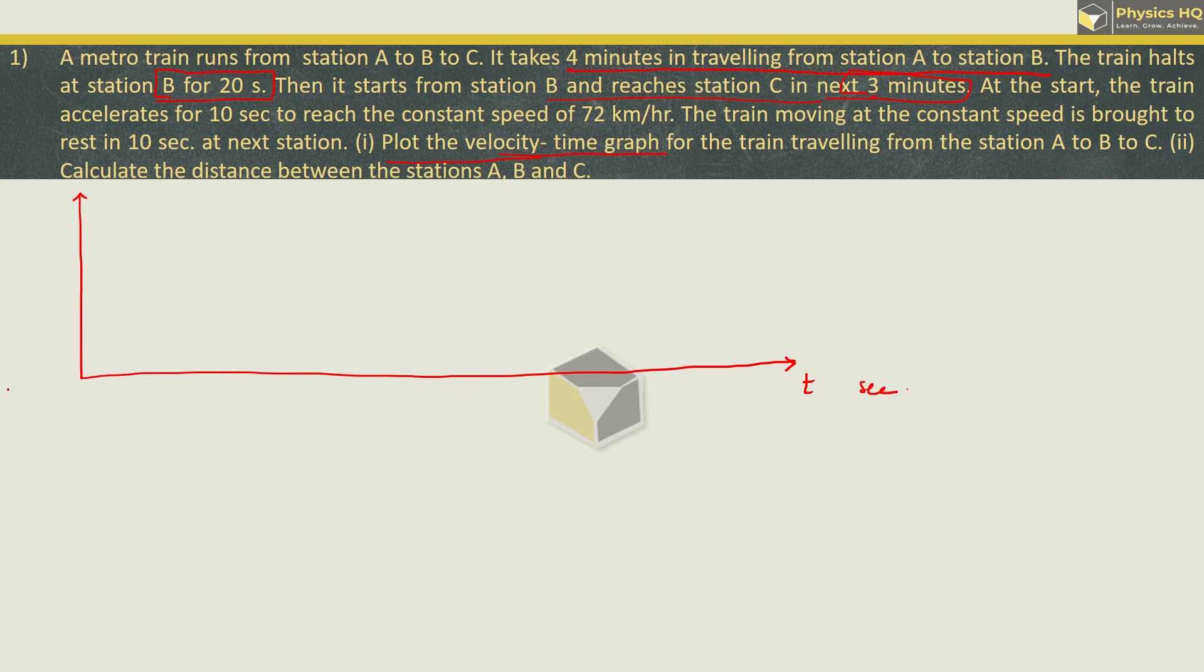Now, it is taking 4 minutes to travel from station A to B. Let us say here is station A. After 4 minutes, 240 seconds, it has reached station B. Then it is waiting there for 20 seconds. So at 260 seconds, it took 3 minutes to reach station C. 3 minutes means 180 seconds, and 260 plus 180 is 440. So this is the point of 440 and this is your station C.